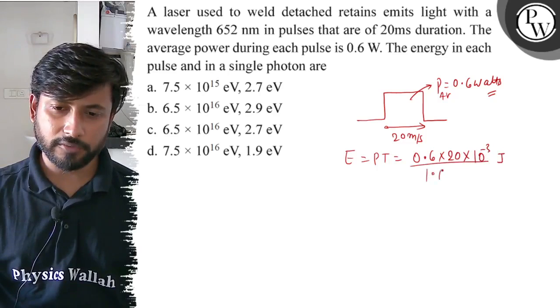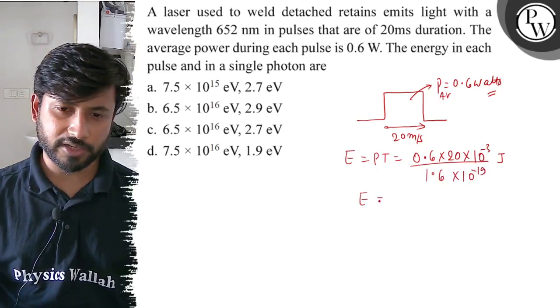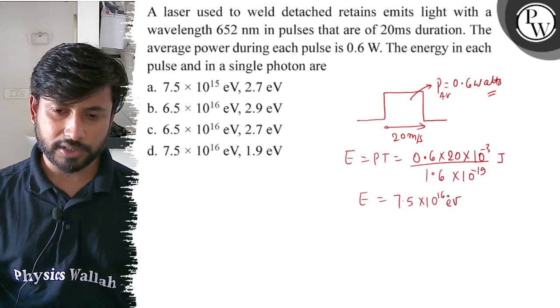Now if we convert to electron volts, divide by 1.6 × 10^-19. So energy is 7.5 × 10^16 electron volts.